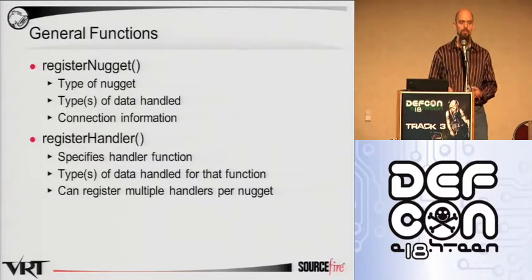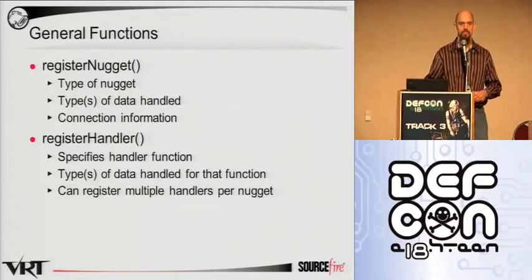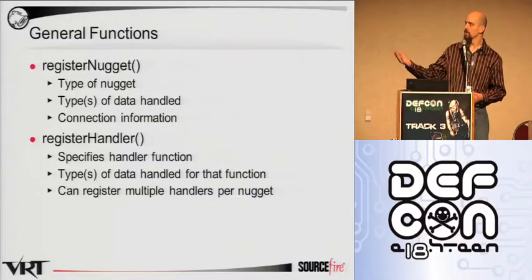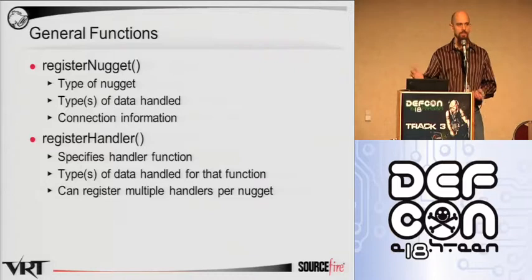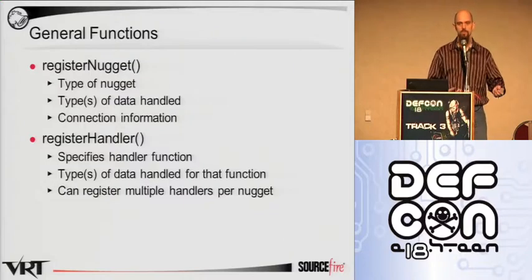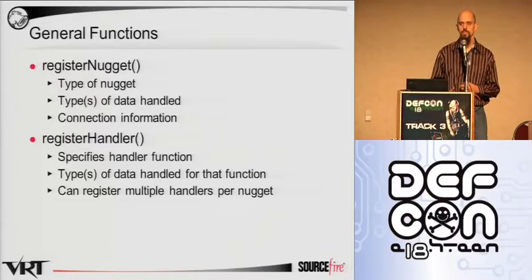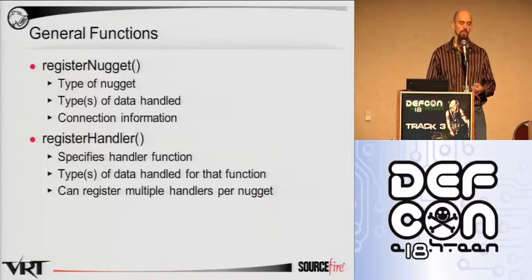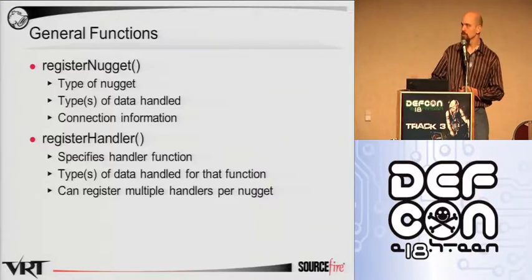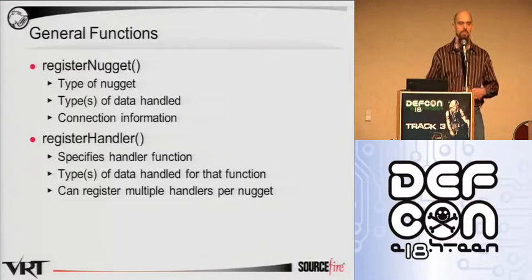Since nuggets are building blocks, and the whole system is designed around the idea of building blocks where individual specialized pieces work together as a whole, we have some general functions. Register Nugget tells the database: I'm here, this is my name, this is my UUID, and this is the kind of data I'm either taking in or putting out. Register Handler is more of a detection nugget function — it tells the dispatcher what kind of data it handles. It is possible to have a single detection nugget handle multiple types of data by calling Register Handler with different function pointers.